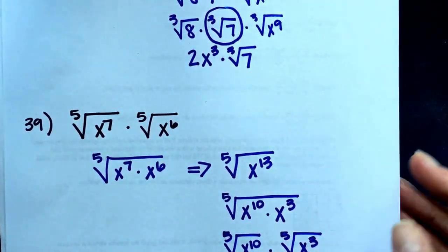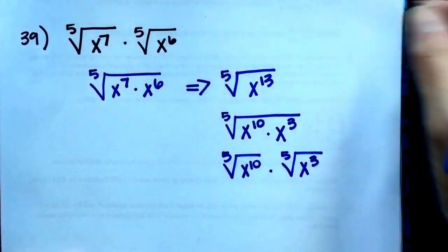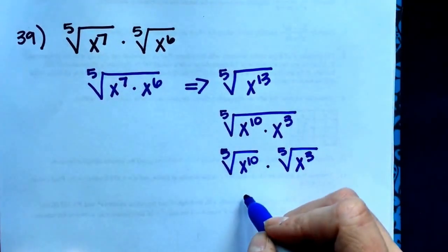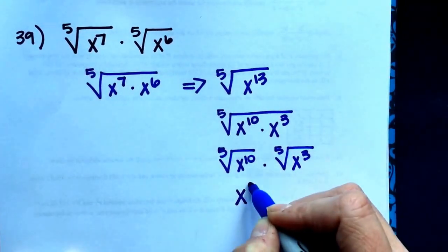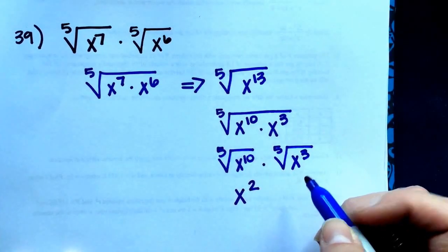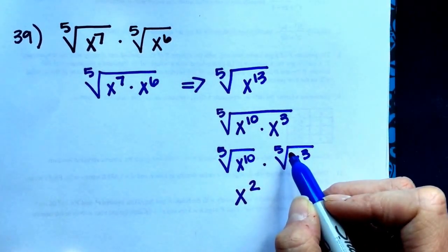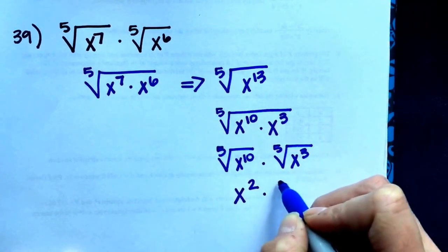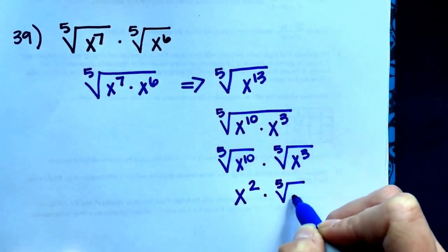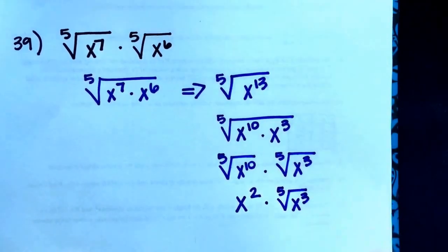For the first one then, power divided by root, 10 divided by 5 is 2. So this simplifies to x squared out of the radical. 3 divided by 5 is a decimal or a fraction. That cannot be simplified any further, so I'm going to leave that in the radical.